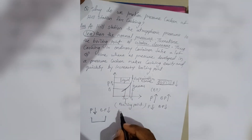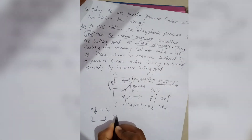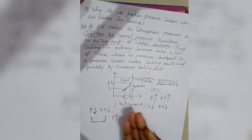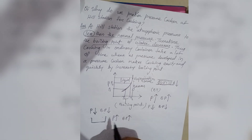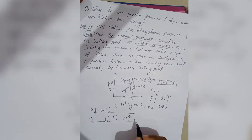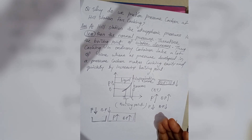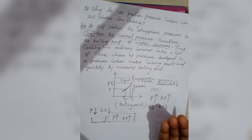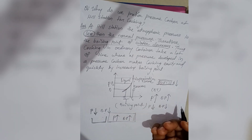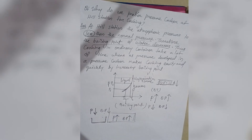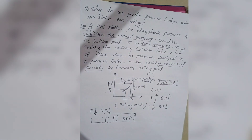If you have a pressure cooker, you can develop pressure. If you increase the pressure, the boiling point of water also increases. You can easily and quickly bring water to a higher boiling point, so cooking happens much faster. This is why a pressure cooker is preferred at a hill station.